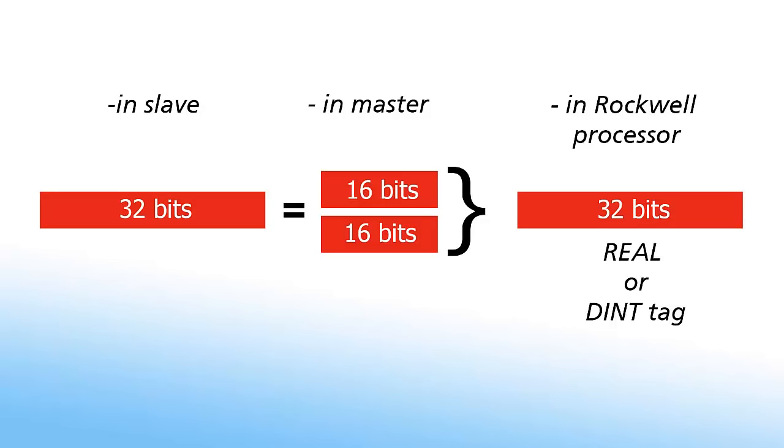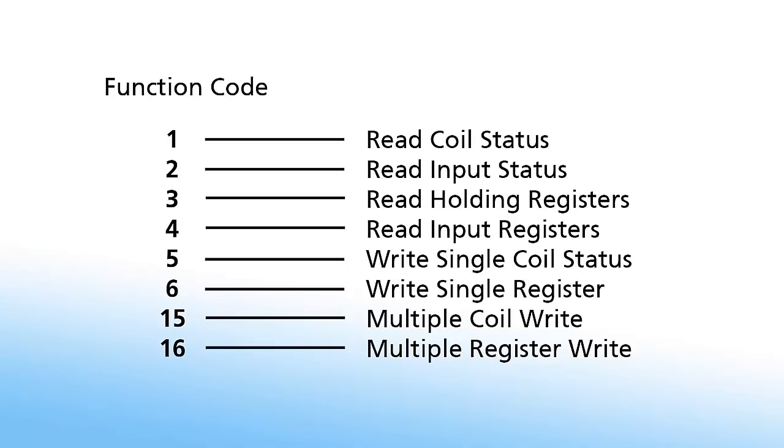This is accomplished by copying the two 16-bit registers to one real tag in the Rockwell processor. Modbus function codes are simple numerical codes that tell the slave which table to access and whether to read or write to that table. Each function code relates to a specific data table address range. For instance, function code 1 is the code to read an individual bit status. Function code 16 is the code to write multiple holding registers. Here are some of the most commonly used function codes.